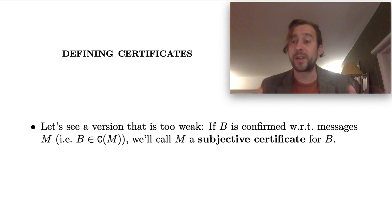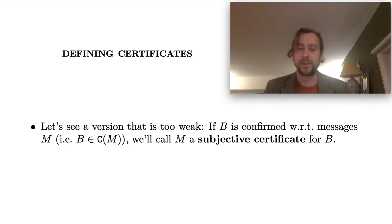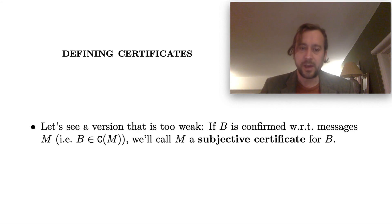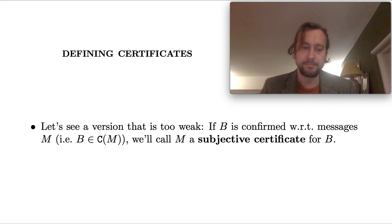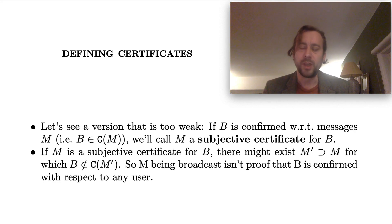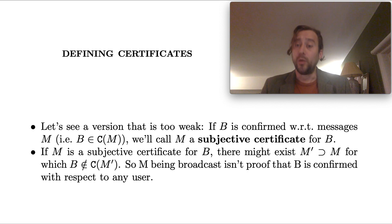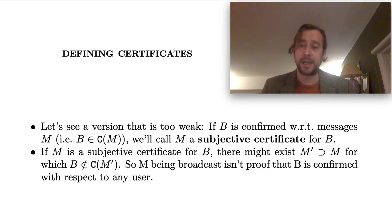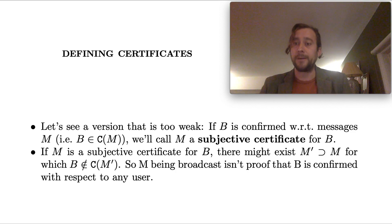Let's see the definition of certificates. If block B is confirmed with respect to a set of messages M — that is, B is in C of M — then we'll call M a subjective certificate for B. The problem with that as a notion of certificate is that if M is a subjective certificate for B, there might exist some larger set M' such that B doesn't look confirmed with respect to M'. In Bitcoin, M could be a chain of blocks, and M' could be a larger set that includes that chain but also includes a longer, incompatible chain. So M being broadcast isn't proof that B is confirmed with respect to any user.